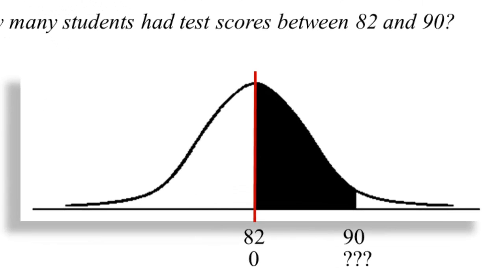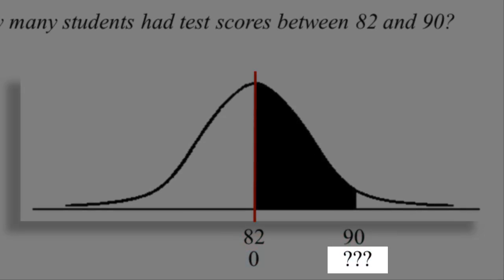Notice that I have two scales here. The first scale is in test scores — the 82 and the 90. Underneath it, I've put down what I know about the Z-scores. I know that a score equal to the mean has a Z-score of 0. I don't know what a score of 90 has for a Z-score — I have to calculate that.